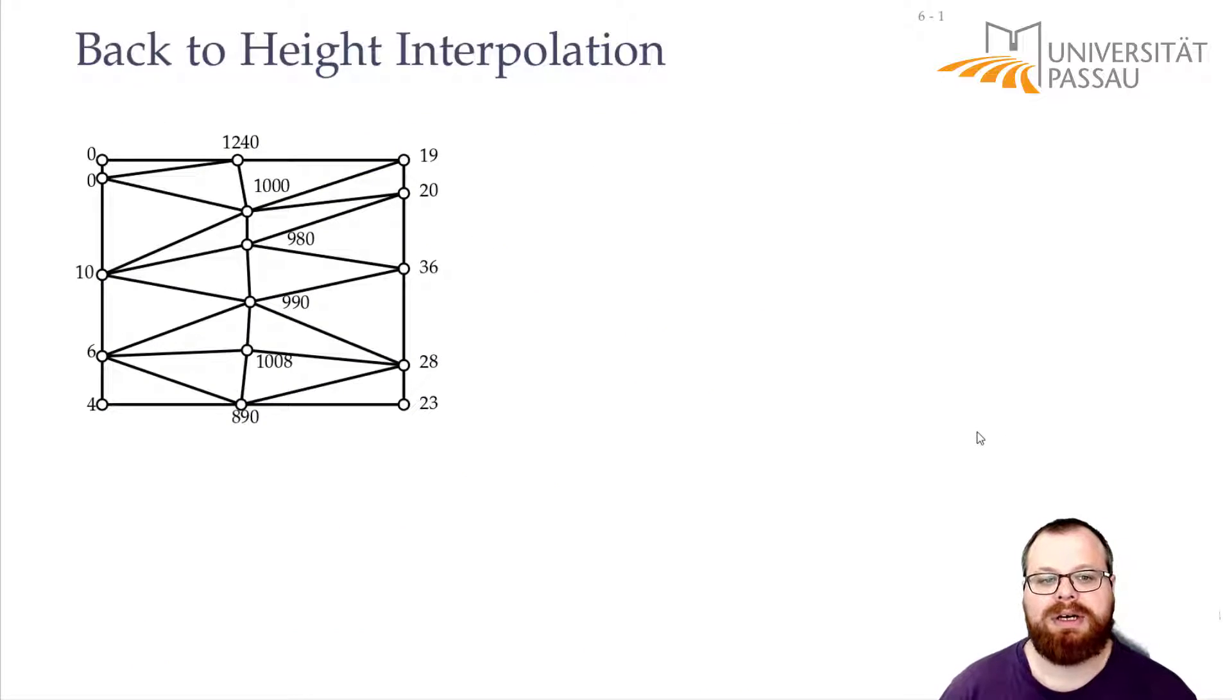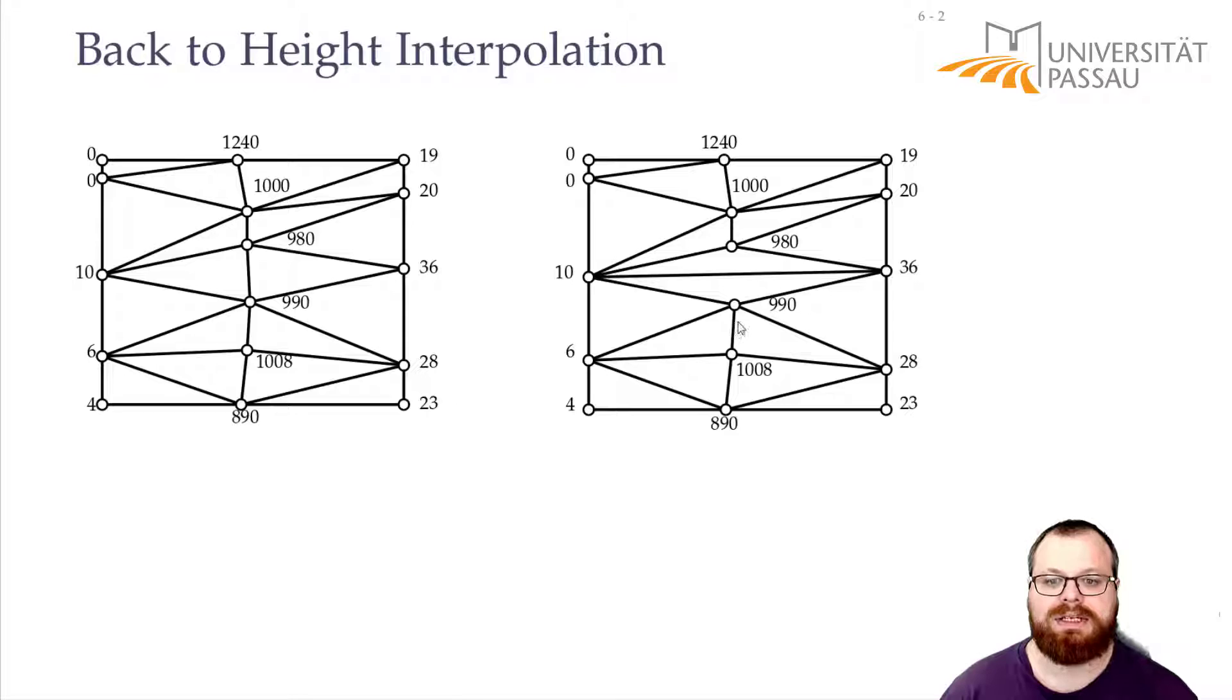So let's go back to the original problem. We have our two-dimensional coordinates, but for every point, every site, we also know what is the height. Now we can have, for example, this triangulation, or we can have this. They differ in this one edge.